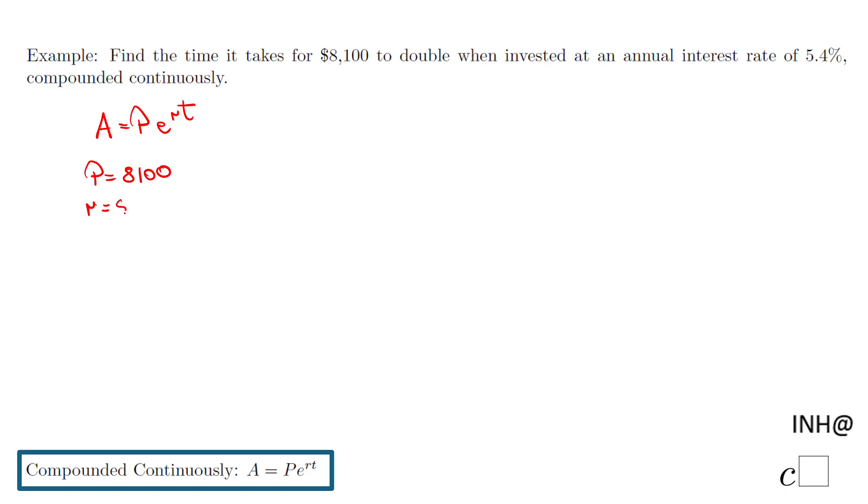r is the rate, which in this case is 5.4%, which has to be changed to a decimal: 0.054. And t is the thing we need to find out.